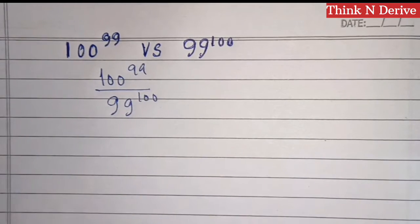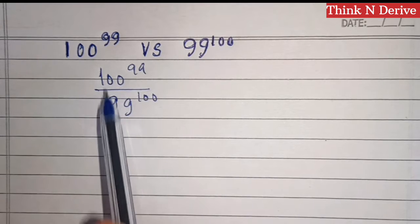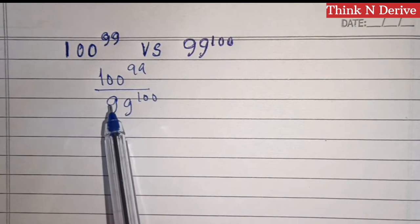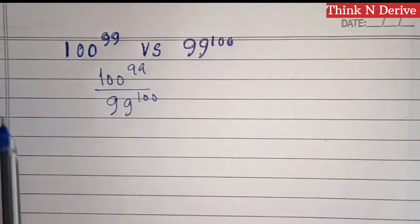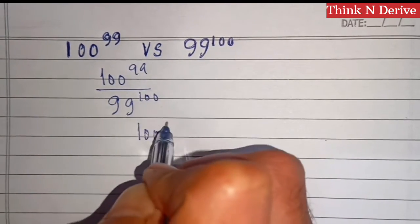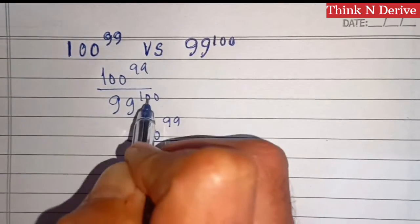As you can see, we have both different bases and different exponents, so I will try to make the exponents the same. I will write 100 as 99 plus 1.